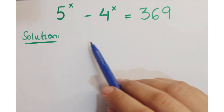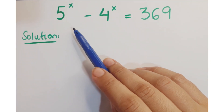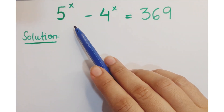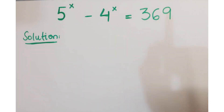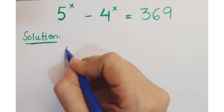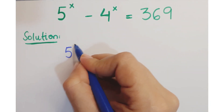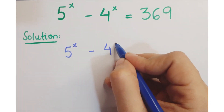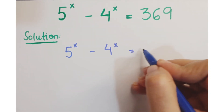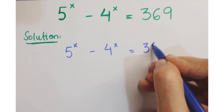Hi guys, look at this question. The question is 5 to the power x minus 4 to the power x equals 369. Let's see how we proceed with this question.